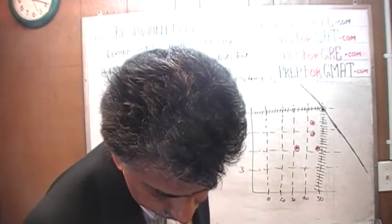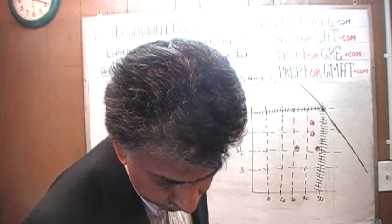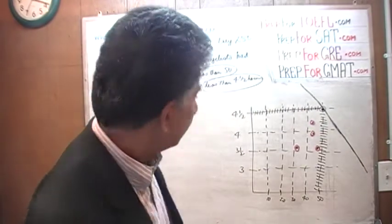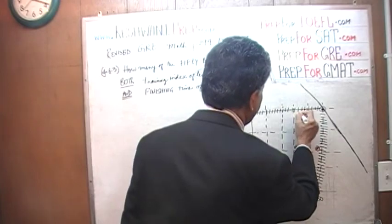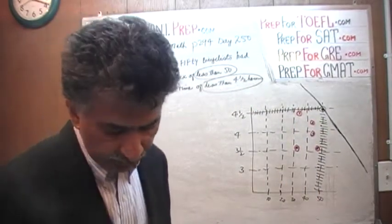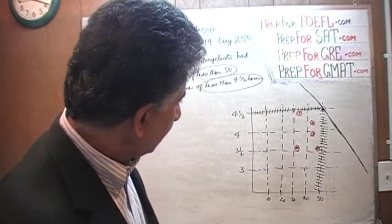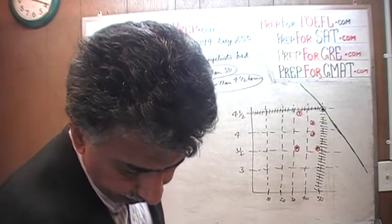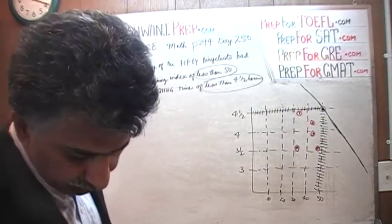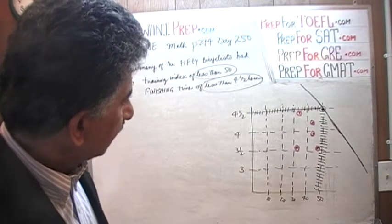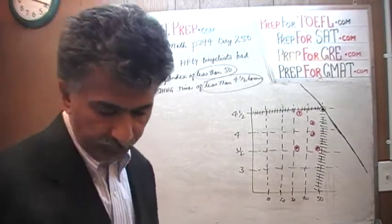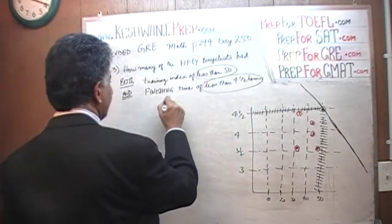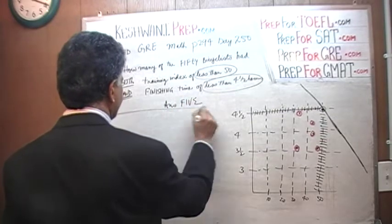I want to make sure I do not miss anything. Finally, there is one more between 30 and 40 on the training index, very close to 4.5 hours. That's it — those are the five points of interest to us. One more time to confirm: there are five of them. The answer is five.